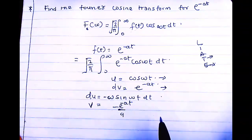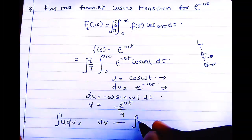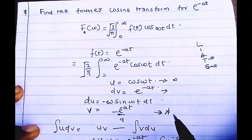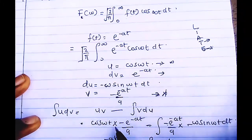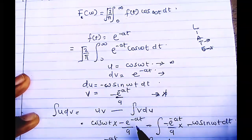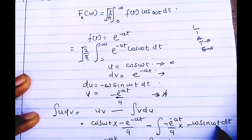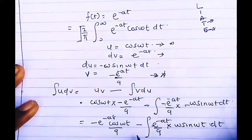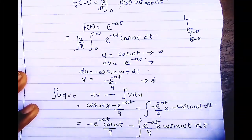Applying the integration by parts formula — ∫u dv = uv − ∫v du — where u = cos(ωt) and v = -e^(-at)/a, we substitute in. After simplification, the minus times minus becomes plus and plus times minus becomes minus, leaving us with: -e^(-at) cos(ωt)/a minus the integral of e^(-at)/a times ω sin(ωt) dt.